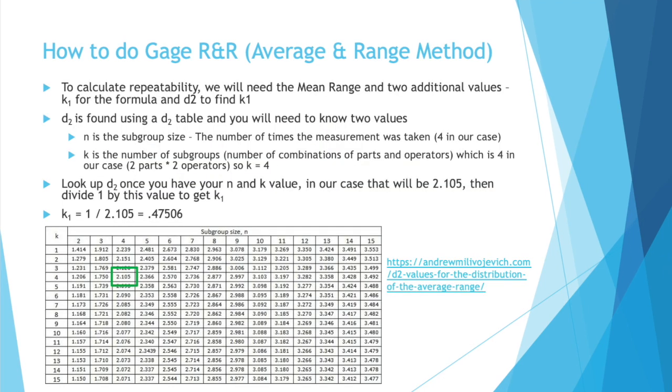Once you have these values, you then need to use something called a d2 table. First we're going to calculate repeatability, and to do that we need a value called k1 and d2. And the d2 table is used so we can find the k1 value for the equation. To find your d2 value in the table, you need to know two things. The subgroup size, which is n, that's the number of times the measurement was taken. So in our case each part was measured four times.